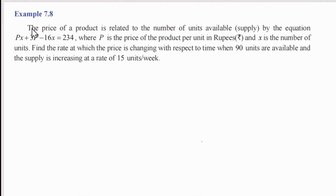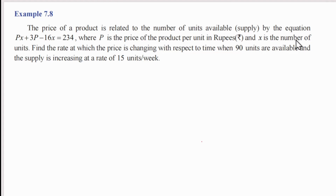Welcome students. In this video we will look at example 7.8. The price of a product is related to the number of units available by the equation px + 3p - 16x = 234, where p is the price of the product per unit in rupees and x is the number of units. Find the rate at which the price is changing with respect to time when 90 units are available and the supply is increasing at the rate of 15 units per week.